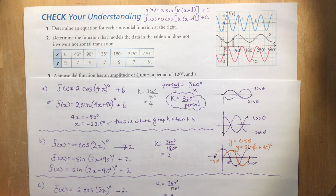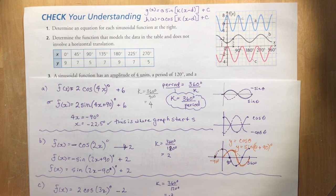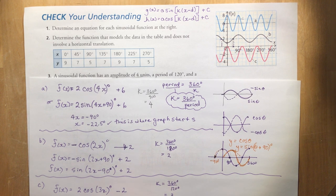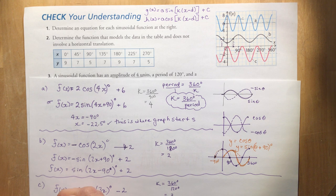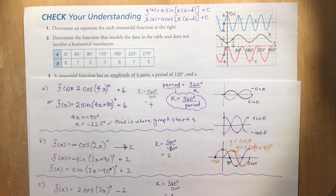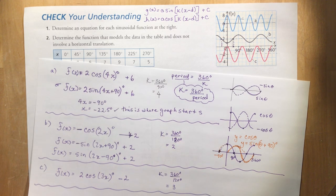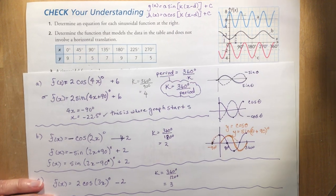Don't be confused if the back of the book gives different answers — they may use a sine graph or other forms. This approach gives the easiest equation. To verify: put any value for x into your equation and into the textbook's equation, and you'll get the very same answers. That's A, B, and C done. Now let's slide up to Question 2.